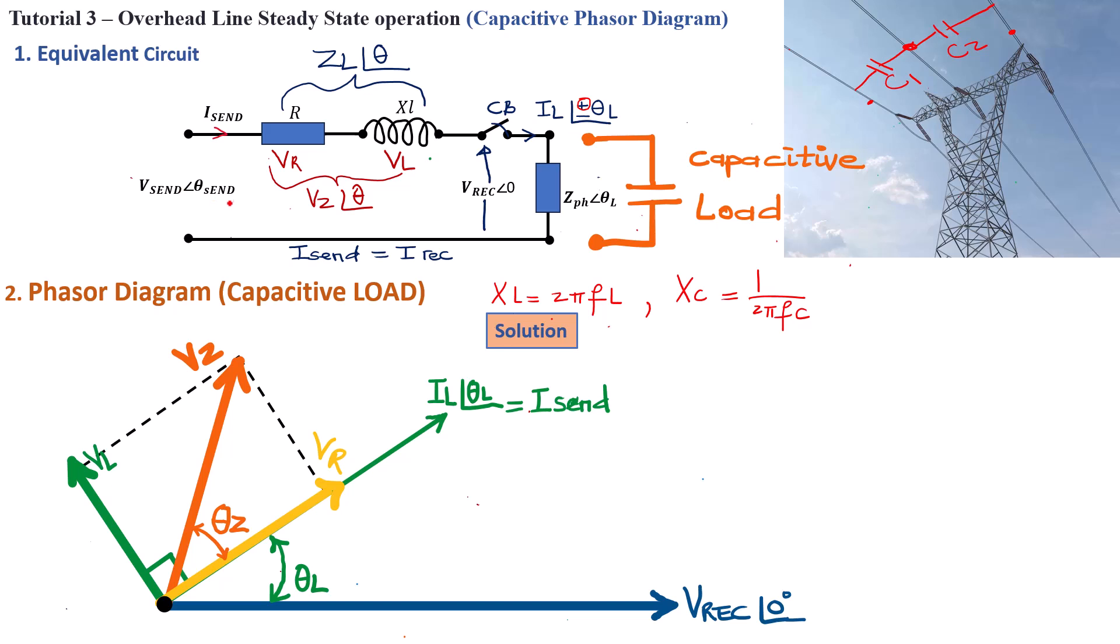Now, if you want V-send, then you can just add the V-rec, V-receiving plus VZ to get V-sending. So now, we've got V-receiving here that we've already plotted, and we've got the VZ here. So we can just make a phasor sum of these two here by making a projection of VZ to the top of V-rec here.